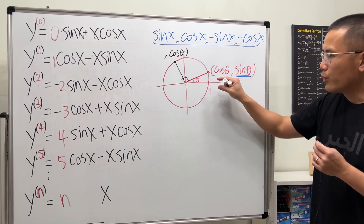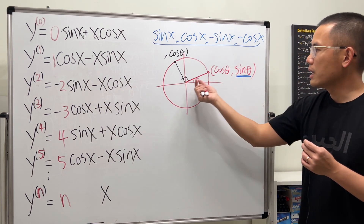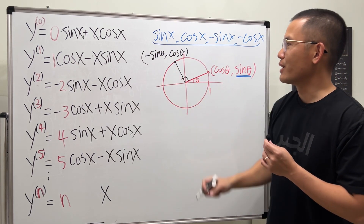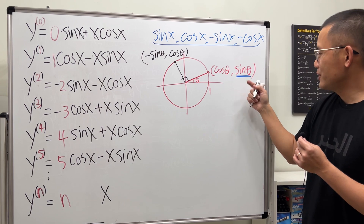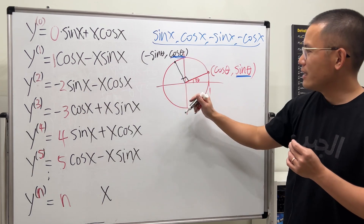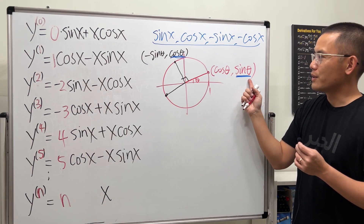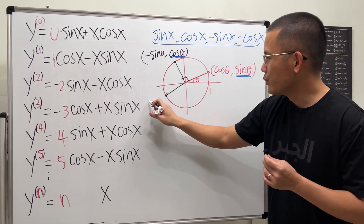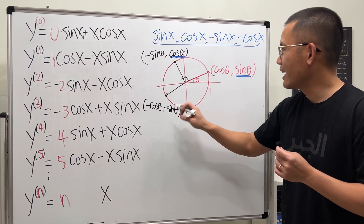After rotating 90 degrees, the y-value becomes the x-value, but we're now on the left-hand side, so it becomes negative sine θ. Matching the y-coordinates: we have sine θ, then cosine θ. Keep rotating — the next point is the negative version of the earlier one, giving negative cosine θ and negative sine θ.